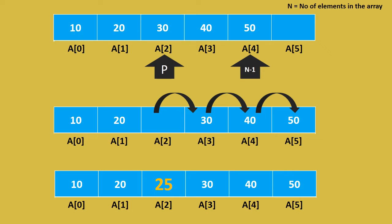Let me take an example. Let us say you have a family get-together or function. You need to have an appropriate area where you can accommodate guests. Same thing here also — you need to have an accommodatable area where you can place the new element.